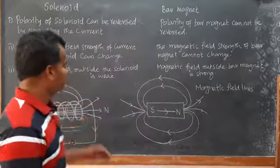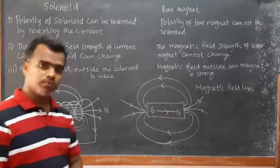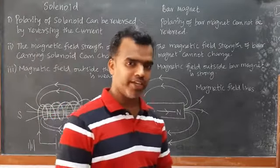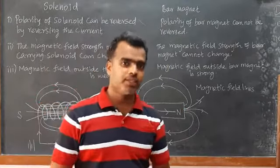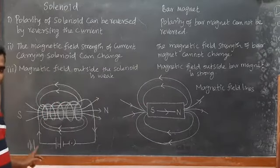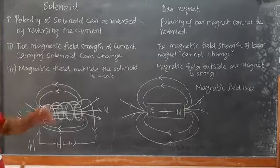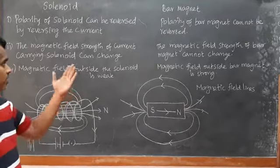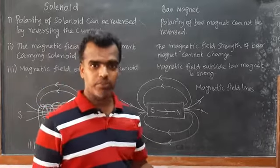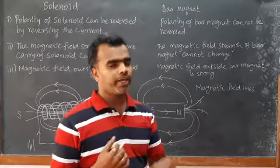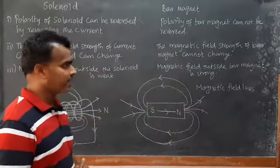Second difference: the magnetic field strength of a current carrying solenoid can be changed. If we pass more current, the magnetic field inside the solenoid also increases; if the current is small, the field becomes small. But for a bar magnet, we cannot change the strength of its magnetic field because it is a fixed piece of magnet — we cannot give current to a bar magnet.